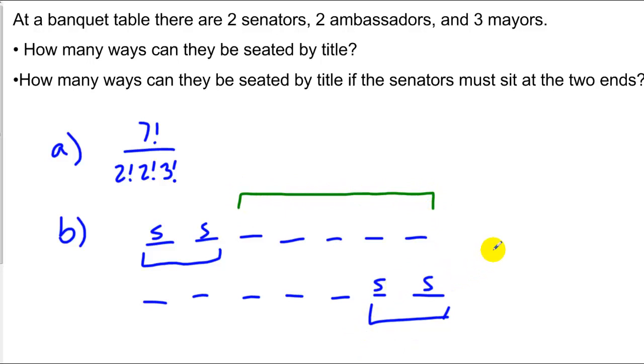So what I've got in both cases is I've got 5 factorial, and then I'm seating ambassadors and mayors. So I have repeats there of 2 factorial and 3 factorial. And that will be the same in both cases.